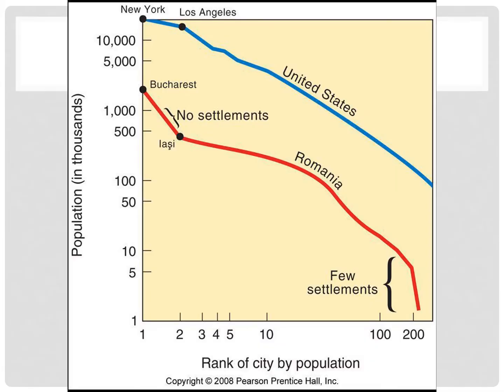The United States, Australia, and Brazil have population distributions that closely match with the rank size rule. But generally, the rank size rule applies in more developed countries, as developing countries tend to have a primate city.